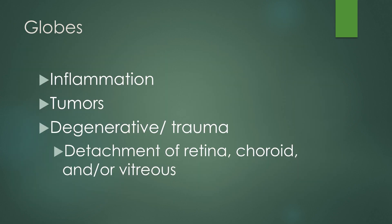The globes can be affected by inflammation, as well as primary and metastatic tumors. You can also get degenerative or traumatic changes to the globes, including detachment of the retina, choroid, or vitreous, associated with or without hemorrhage.